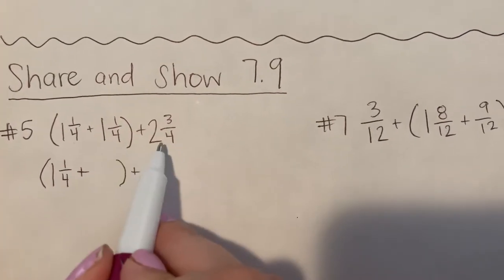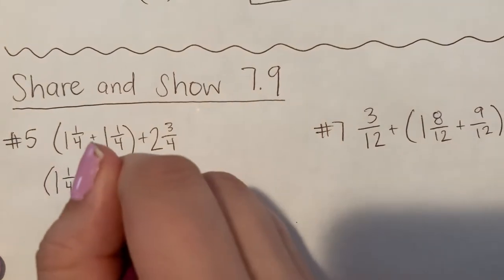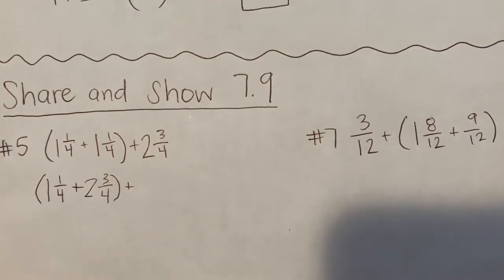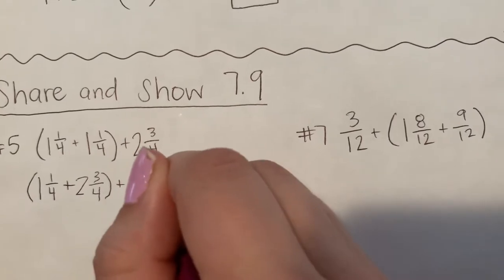So I'm gonna switch 1 and 1 fourth and I'm gonna switch that with 2 and 3 fourths because it doesn't matter what order I add these in, and that means I need to add 1 and 1 fourth at the end.